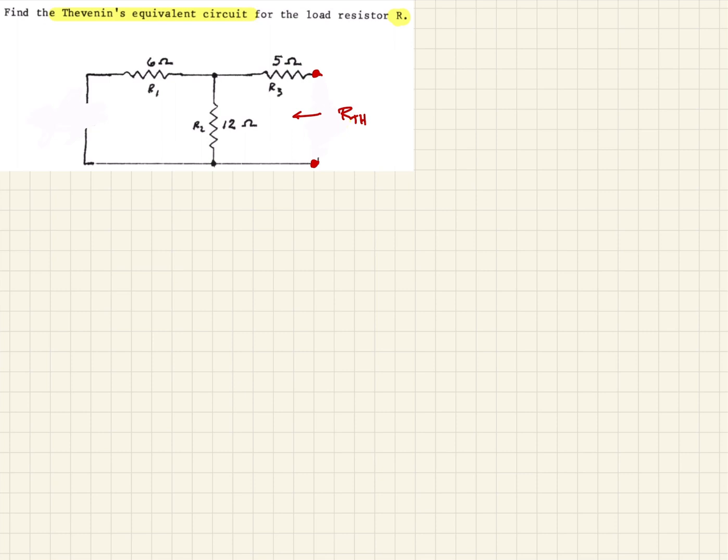And so we put a short in place of that. And if there were current sources, we would open circuit them, but there aren't any. So looking at this, we should be able to see that we have a 6 and a 12 in parallel, and then those are in series with this 5.